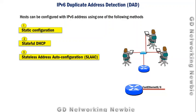The first method is static configuration, where we configure the IPv6 address manually on the client machine. The second method is DHCP — a stateful DHCP server — where the client requests an IPv6 address from the server and the server assigns it. The third method is Stateless Address Auto-Configuration (SLAAC), where the client part is calculated using the EUI method.